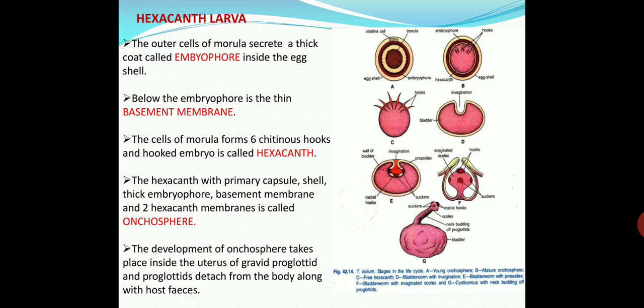The hexacanth together with its primary capsule shell, thick embryophore, basement membrane, and two hexacanth membranes is called the onchosphere. In this slide, picture C shows the hexacanth with six chitinous hooks, picture A shows the early onchosphere consisting of the axial cell and embryophore, and picture B shows the mature onchosphere consisting of the hexacanth with primary capsule shell, thick embryophore, basement membrane, and two hexacanth membranes.